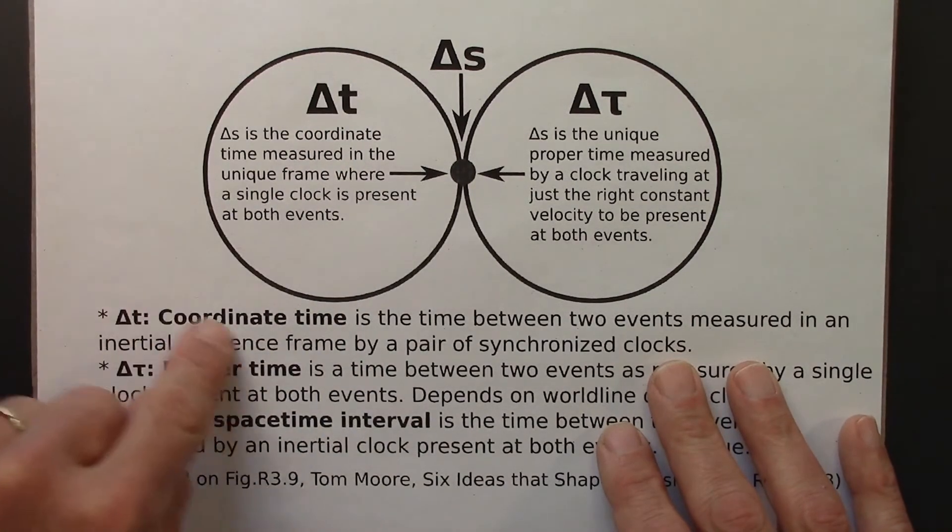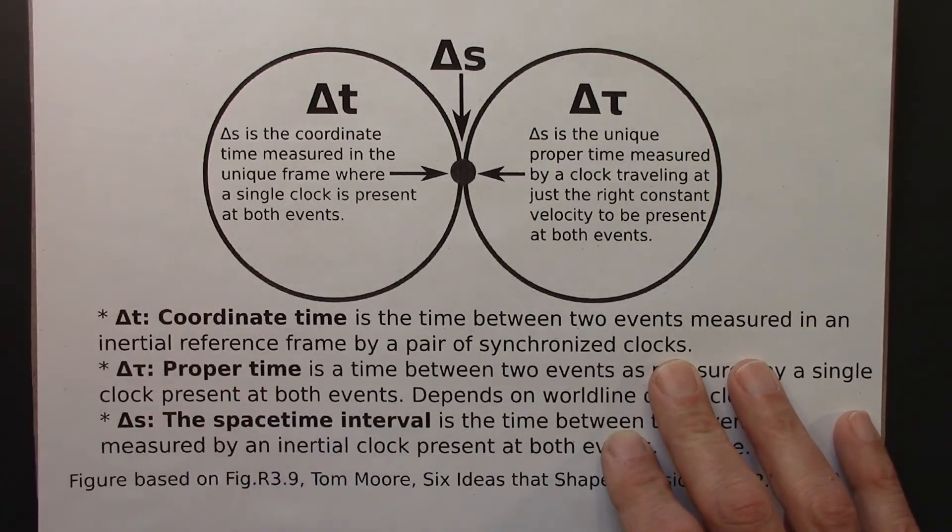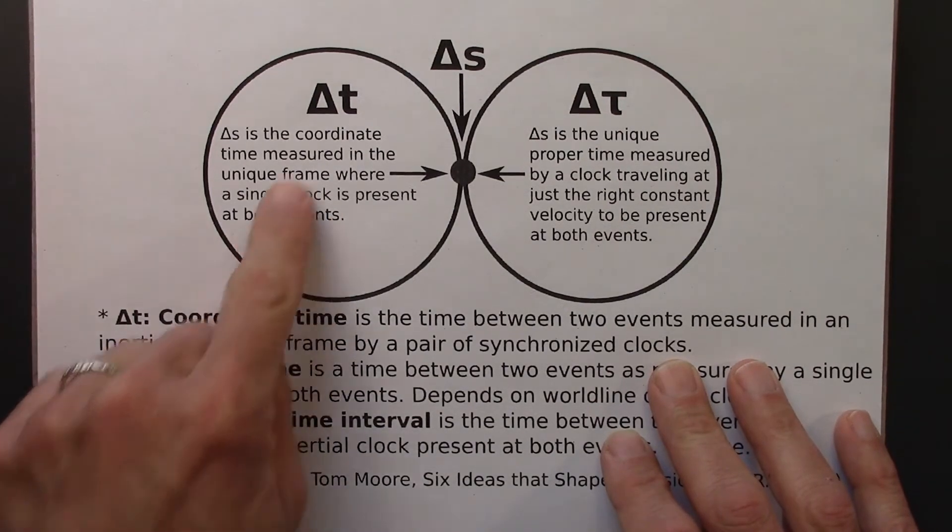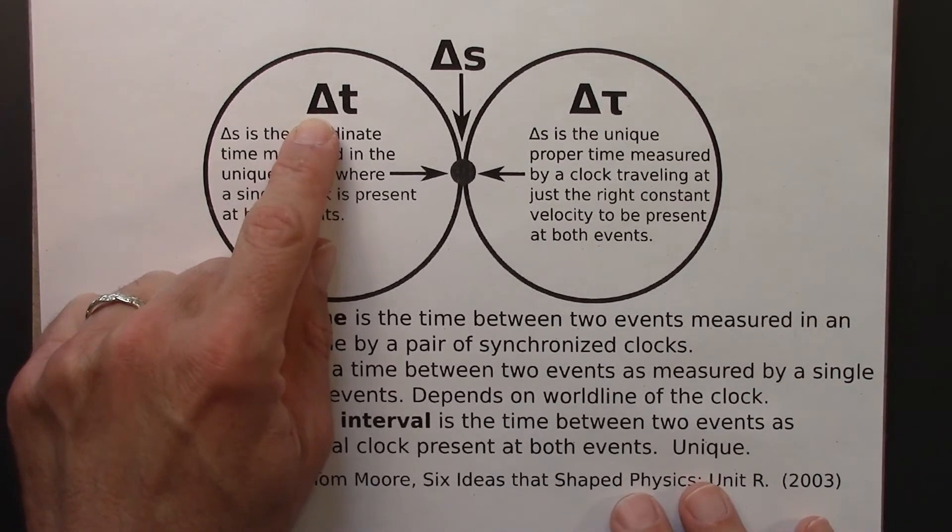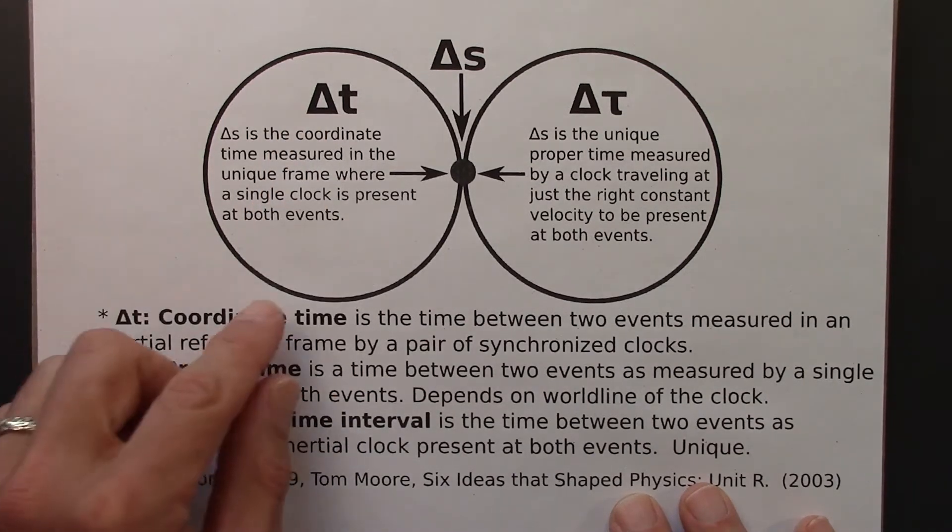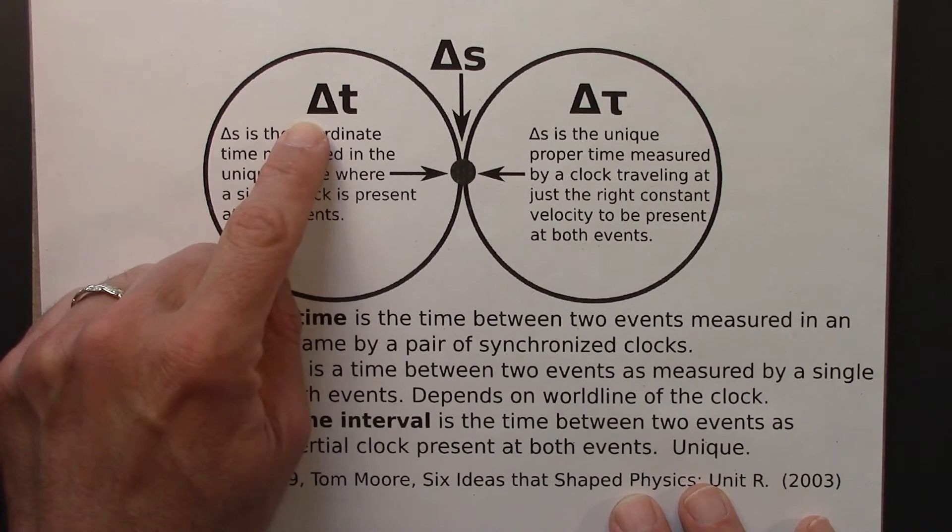There also are lots of coordinate times. So for a given pair of events, a and b, same physical events, if you're in a different reference frame, you'll measure a different delta t. We've seen that a couple times throughout the course. So there's lots of different reference frames, moving at different speeds beta with respect to each other. And in those reference frames, you'll get a different coordinate time interval.